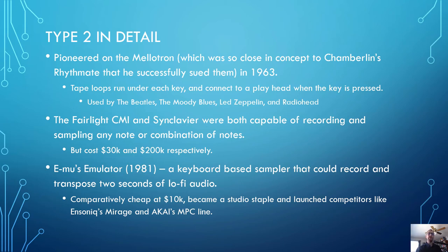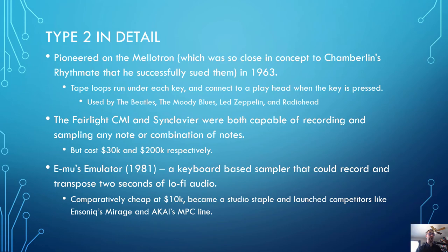Going into digital sampling, two devices were capable of recording and sampling any note or combination of notes starting in the 70s: the Fairlight CMI and the Synclavier. The only problem was the cost — the CMI was $30,000 and the Synclavier was $200,000, making them unaffordable except to studios and very rich musicians. Then in 1981, EMU's Emulator came out — a keyboard-based sampler that could record and transpose two seconds of lo-fi audio for a comparatively cheap $10,000. This became a studio staple and launched competitors like Ensoniq's Mirage line and Akai's MPCs.